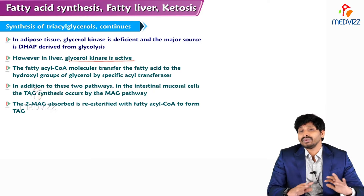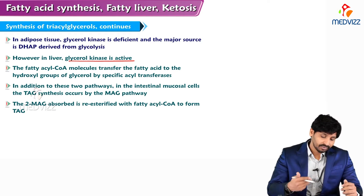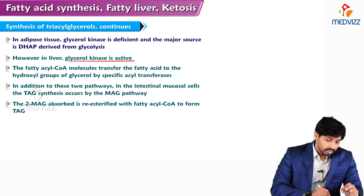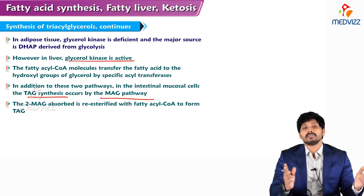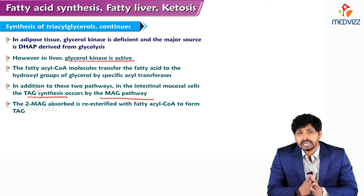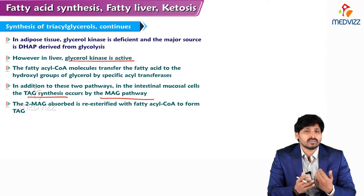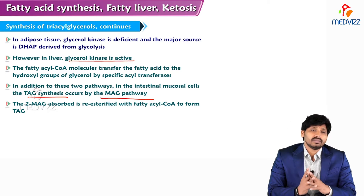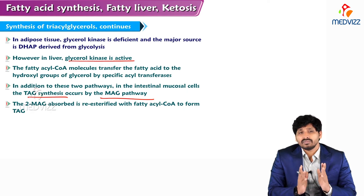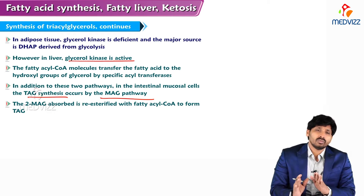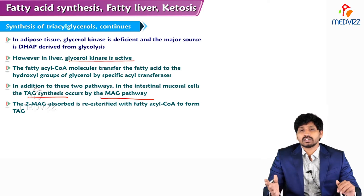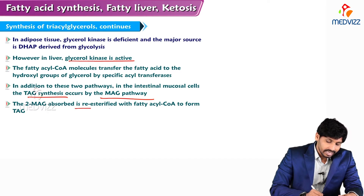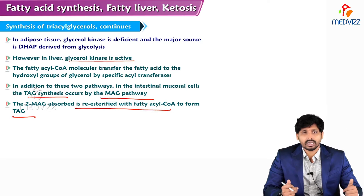Fatty acyl-CoA molecules transfer fatty acids to the hydroxy groups of glycerol by specific acyltransferases. In addition to these two pathways, in the intestinal mucosal cells, TAG synthesis occurs by the monoacylglycerol pathway. Monoacylglycerol is a breakdown product of TAG from exogenous food we consume. Since TAG cannot be absorbed directly from the intestine, it is first converted to fatty acids and monoacylglycerol; upon absorption, monoacylglycerol is converted back to TAG by accepting fatty acids. The 2-monoacylglycerol absorbed is re-esterified with fatty acyl-CoA to form TAG.